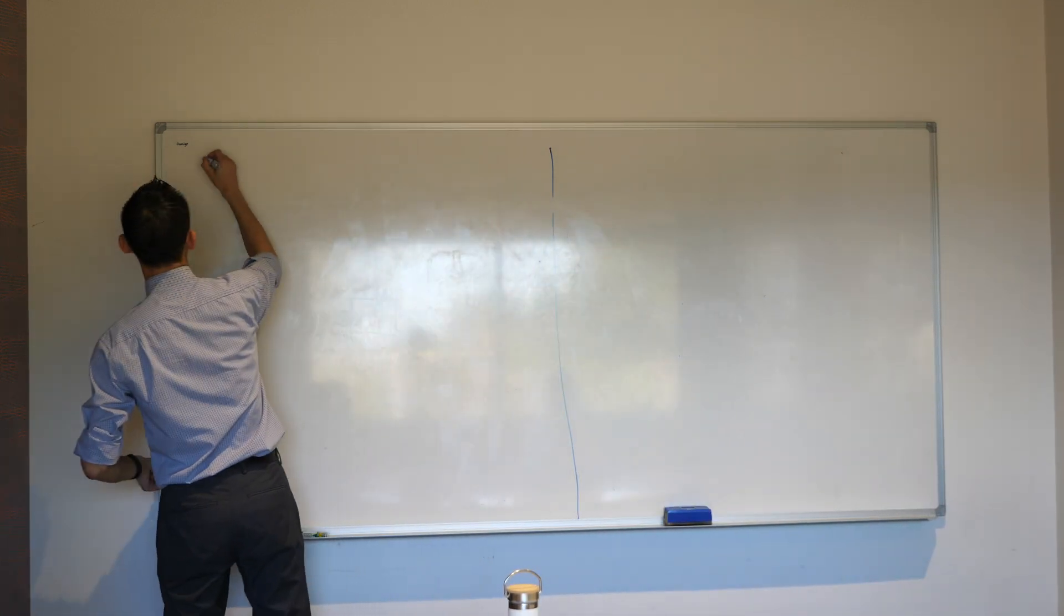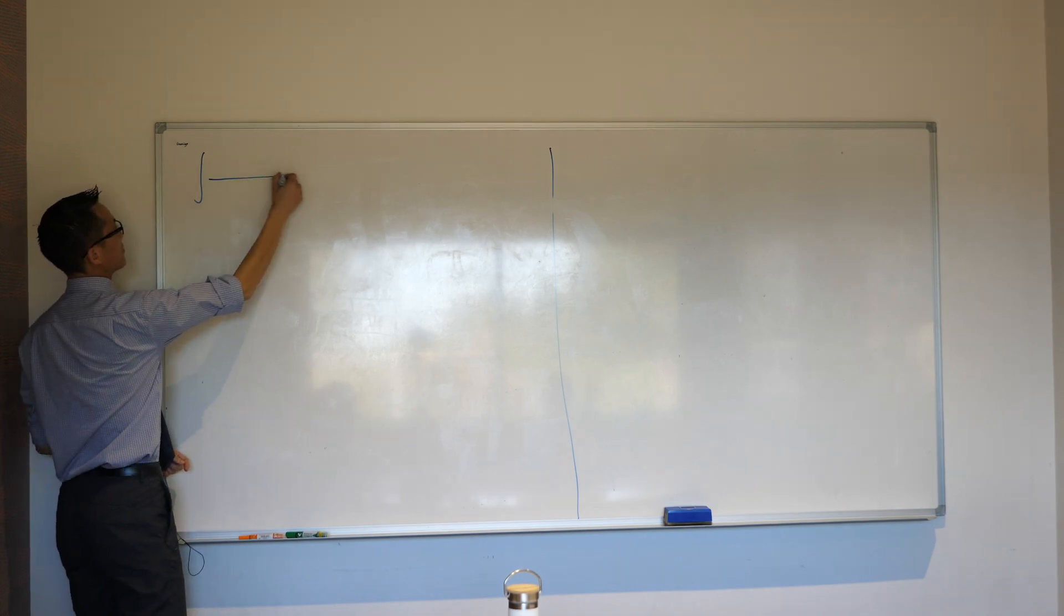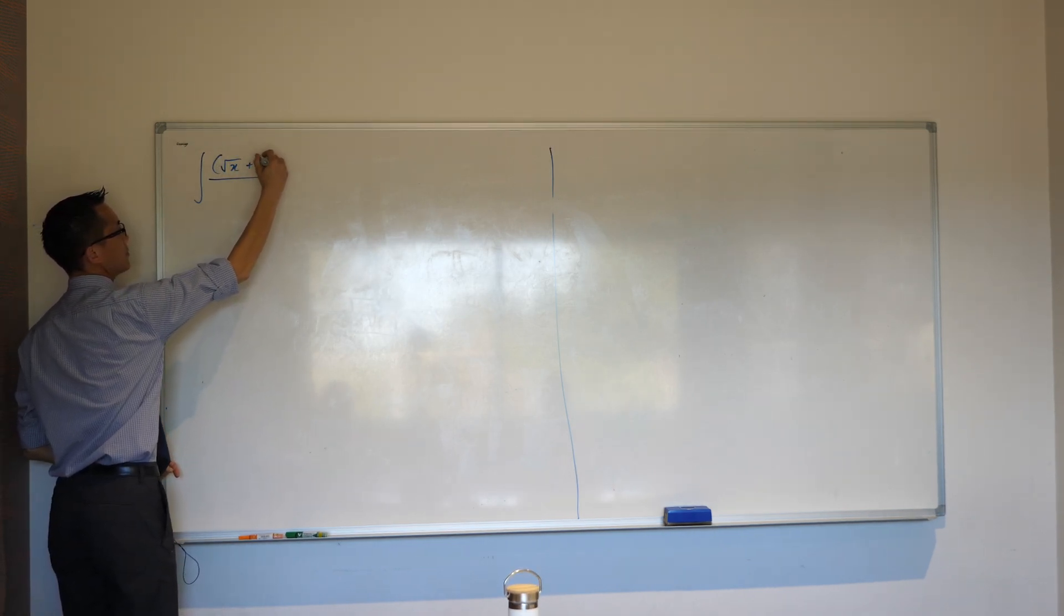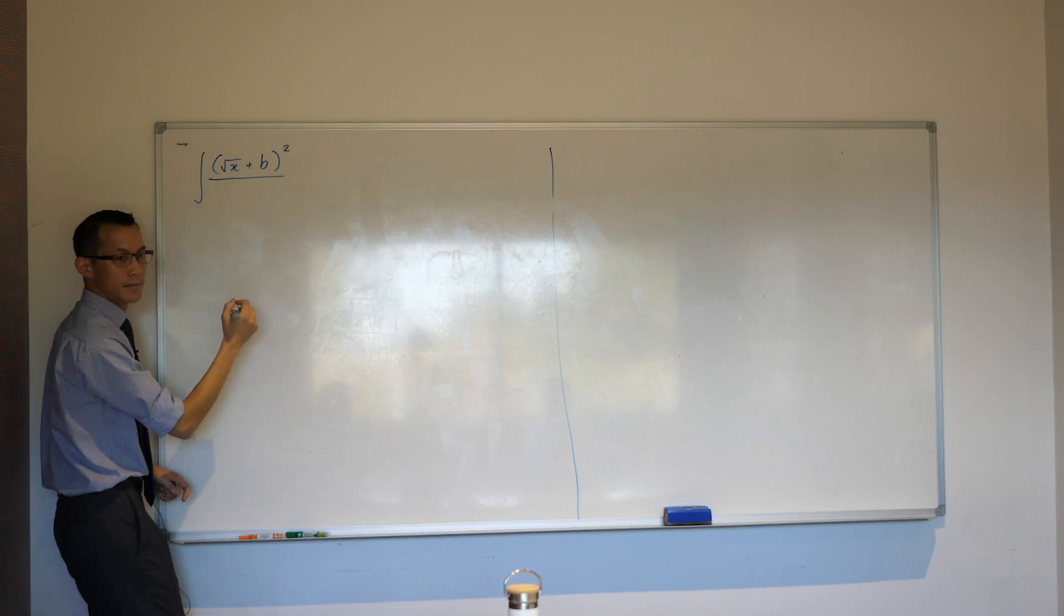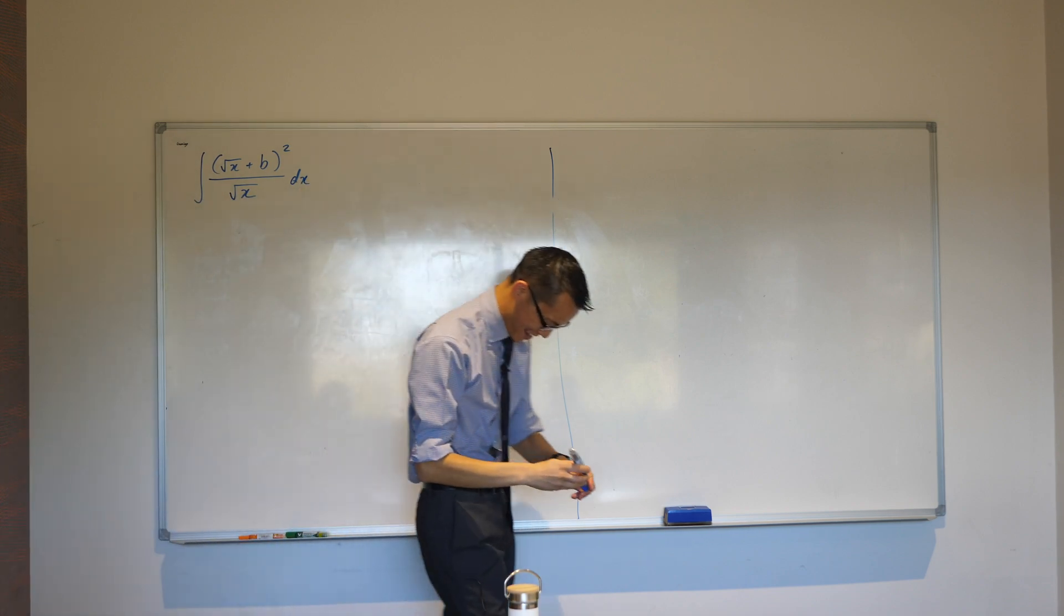And then let's have a go at it. So, integral of, what was it? Bracket root x plus b squared over root x. With respect to x, I really hope. Yeah, okay, fantastic.